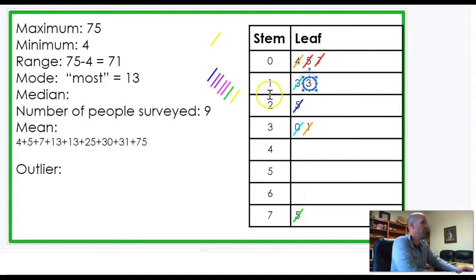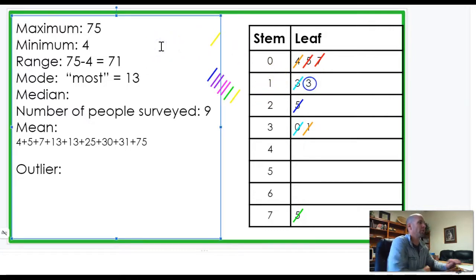That's what's called the middle number, or the median. So, that is one in the tens, three in the ones. The median is also thirteen. It happens to be the same as the mode, but it won't always be that way.